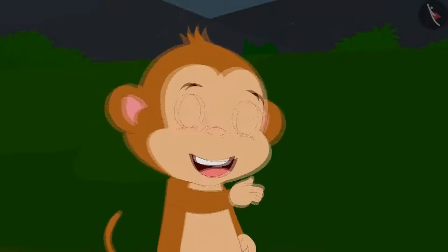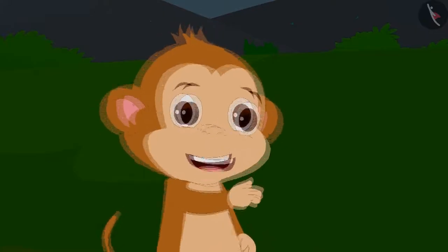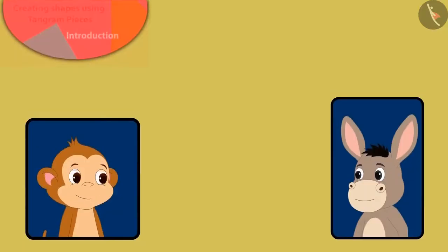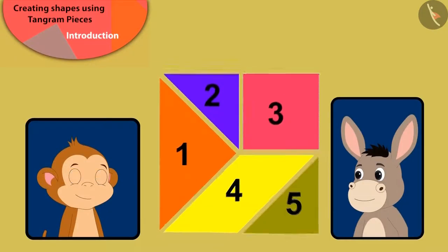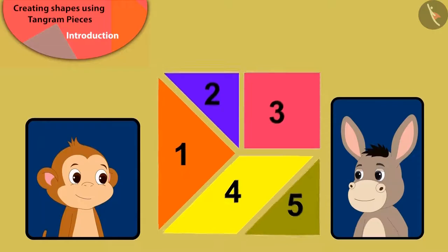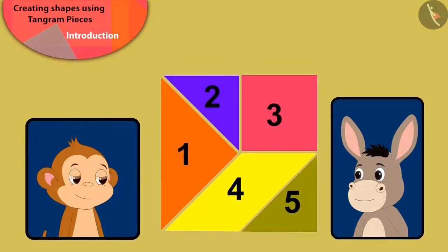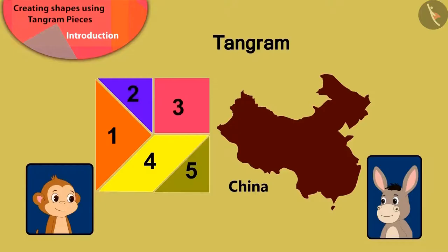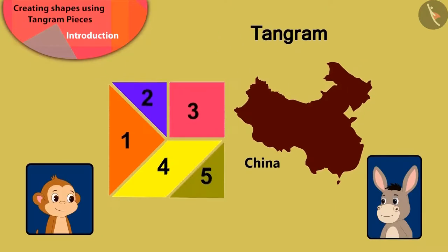As soon as Babban saw Bola, he let out a mischievous laughter. Bola asked him about the pieces of paper. Babban told Bola that five pieces of paper make a square — this is what we know as tangram. Tangram is a unique puzzle made in China, made of different shapes.